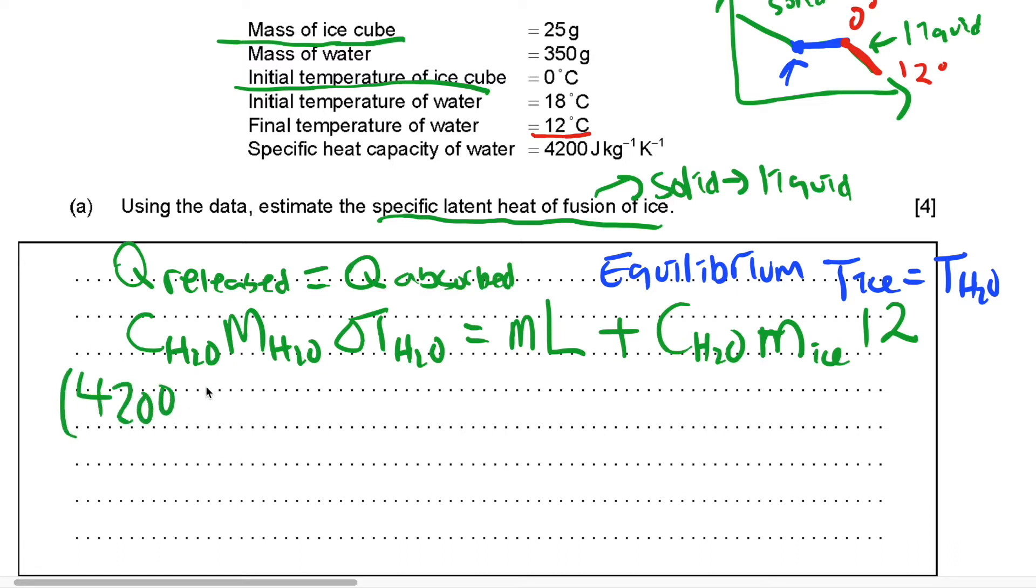So 4200 multiplied by the mass of water, which is 350 grams. Convert that to kilograms divided by 1000 is equal to 0.35. Multiply change in temperature, so 18 minus 12 is equal to 6, is equal to the mass of ice cube. So here is mass of ice, which is equal to 25 grams, is equal to 0.025 kilograms.